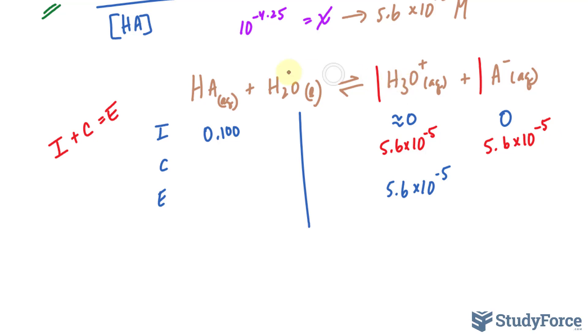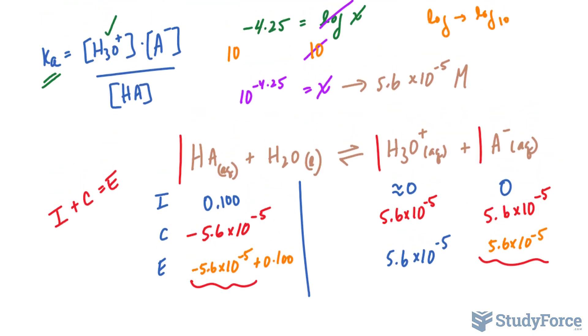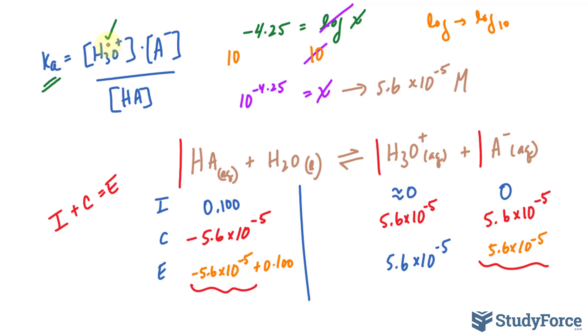If I compare this molecule with HA, it's going to be the same because it's a one-to-one ratio. But since we're comparing products to reactants, it will be negative 5.6 times 10 raised to the power of negative 5. Now we can find the expression for the equilibrium. I'll add up I and C for HA: we get negative 5.6 times 10 to the power of negative 5 plus 0.100. I'll add up 0 and 5.6 times 10 to the power of negative 5.